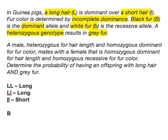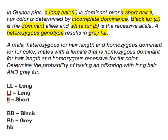With fur color: if you're big B big B, you are going to have black hair. If you're big B little b — be careful here — because it's controlled by incomplete dominance, you're going to have gray fur. And if you're little b little b, or homozygous recessive, you're going to have white fur.